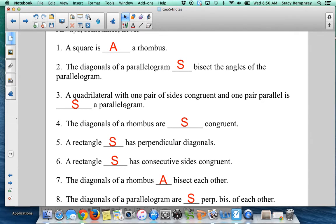A quadrilateral with one pair of sides congruent and one pair parallel is sometimes a parallelogram. Notice that I didn't define here that it was the same pair of sides. So that's why this is a sometimes, not an always.